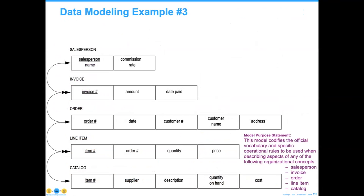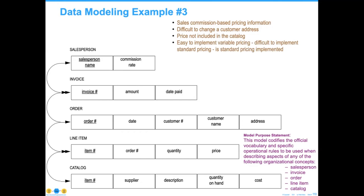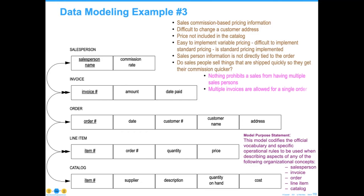One quick third example — a little bit complicated, but you can take these back and look at them. This one is commission-based pricing information. It's going to be very difficult to change the customer address because the customer addresses went to the salesperson and the catalog item — which is probably not great. The price isn't included in the catalog, which might mean variable pricing models come into that. The salesperson is not tied to the order. Nothing prohibits a sale from having multiple salespersons, and multiple invoices are allowed for one order. These models tell you what's actually going on in the system.